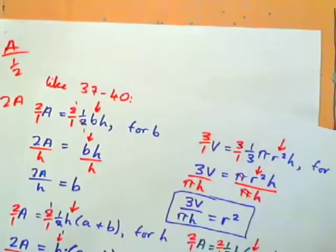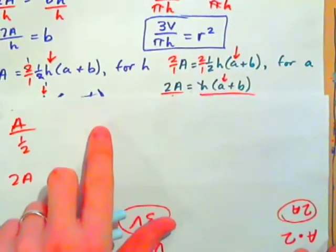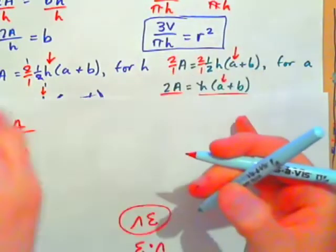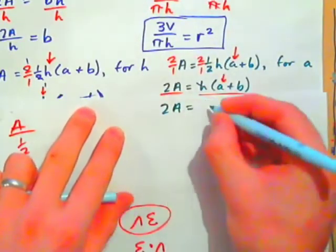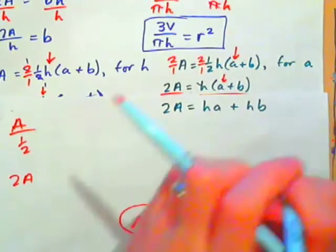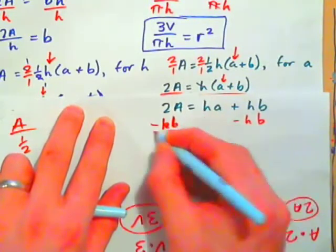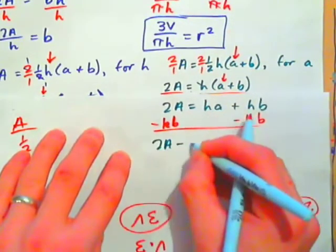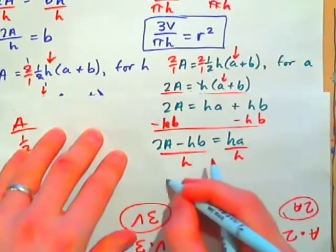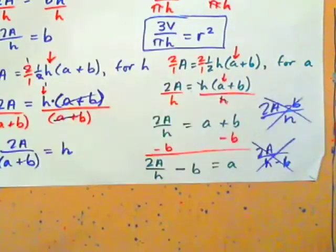Another correct way: after getting 2A equals H times (A plus B), apply the distributive property to get 2A equals HA plus HB. Subtract HB from both sides: 2A minus HB equals HA. Divide both sides by H, giving 2A minus HB all over H equals a. This is also correct, but the first method was preferable.